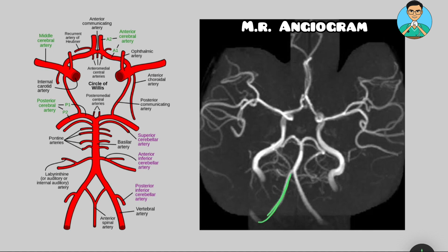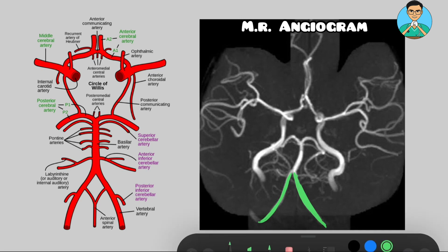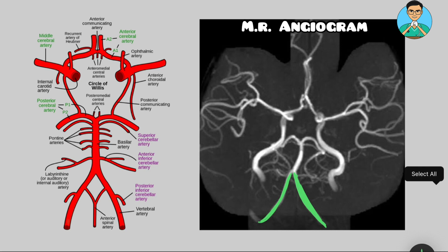This is one vertebral artery and this is the other vertebral artery. On the corresponding schematic diagram, you can see the same arteries — the two vertebral arteries.